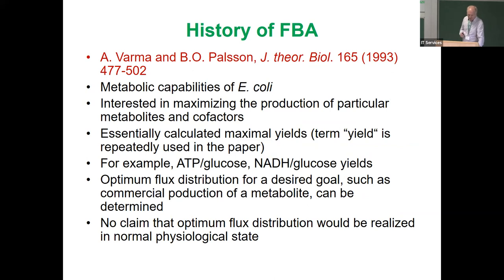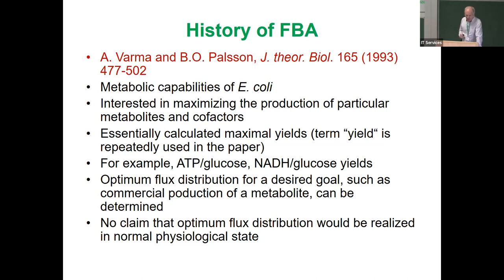One of the early papers by Bernard Palsson is from 1993 in the Journal of Bacteriology; they considered E. coli and were interested in maximizing production of particular metabolites and cofactors — for example, how much ATP or NADH per mole of glucose. They really dealt with yields — the term 'yield' is repeatedly used in the paper — and calculated the optimal flux distribution without claiming it is really achieved.